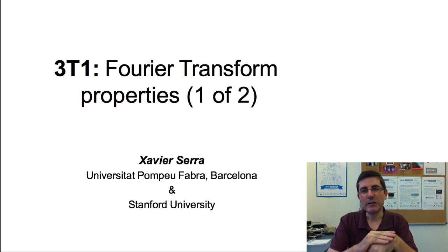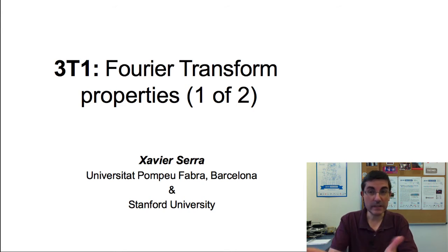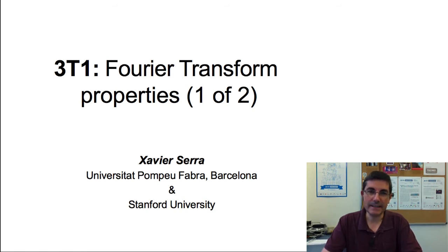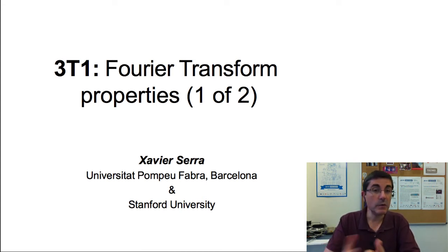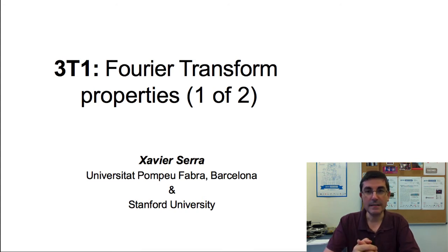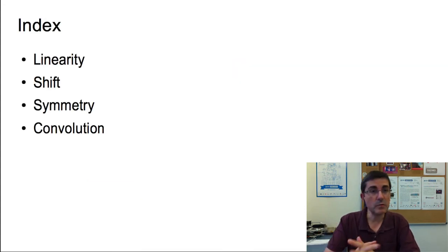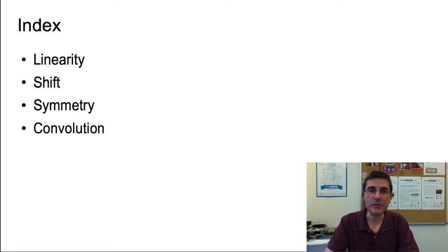Welcome back to the course on Audio Signal Processing for Music Applications. Last week we introduced the discrete Fourier transform, but that's not enough if we really want to understand it deeper and how it behaves when we deal with sounds. This is what we'll be doing this week. In these theory lectures, we'll be introducing the properties of the DFT. In this first one, we will talk about four properties: linearity, shift, symmetry, and convolution.